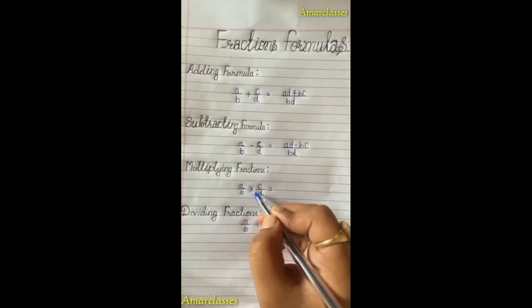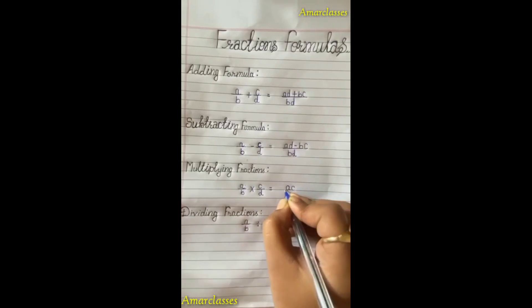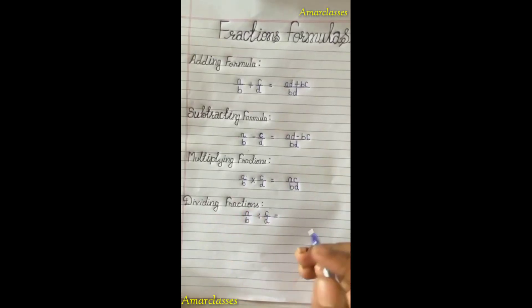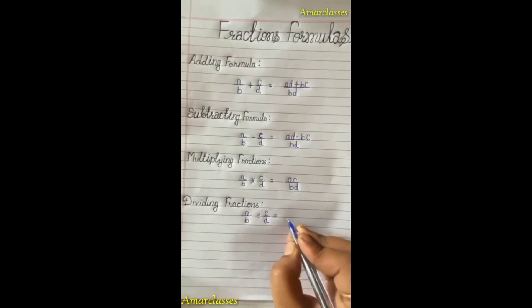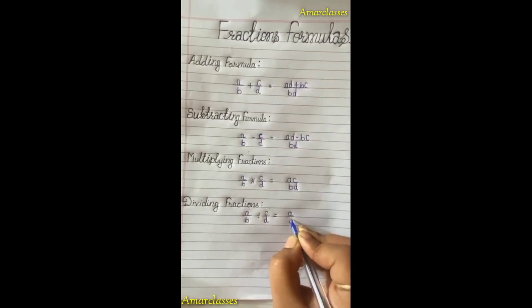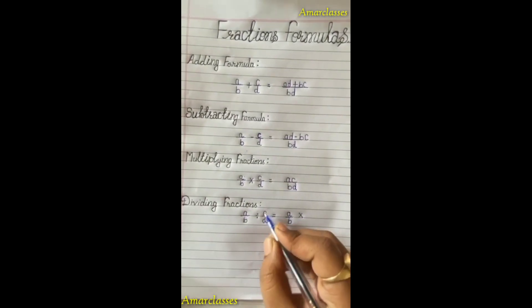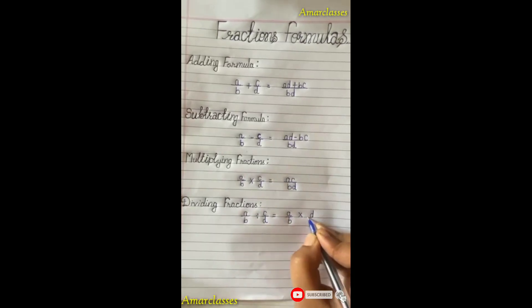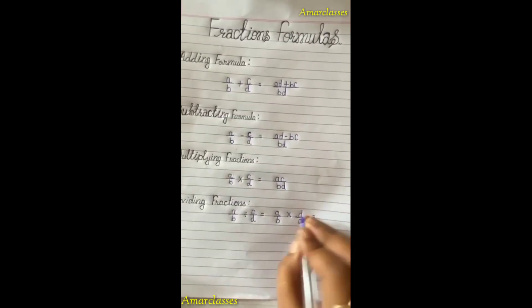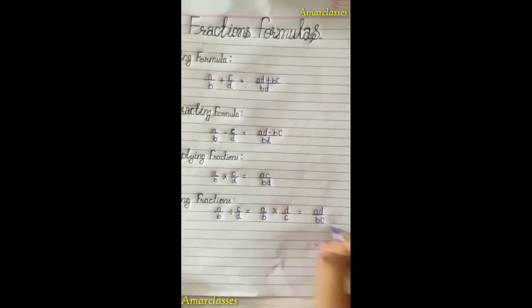Fourth one is dividing fractions: a by b divided by c by d equals, first we change their sign, a by b divided change into multiply and now reciprocate d by c, and now multiply ad by bc. Thank you.